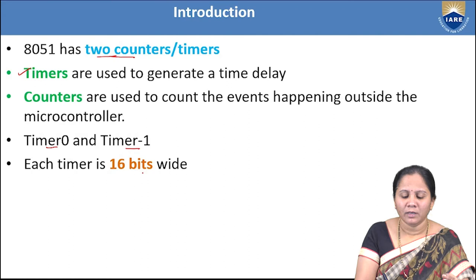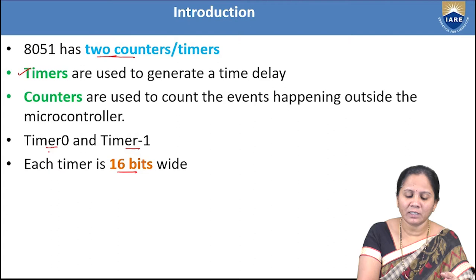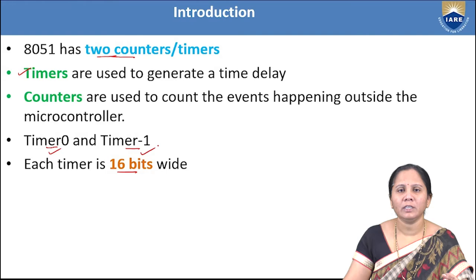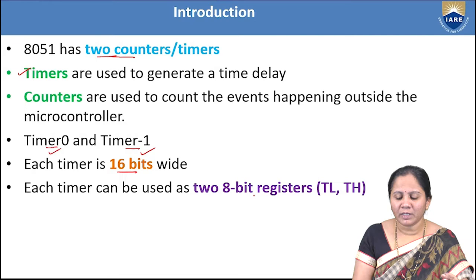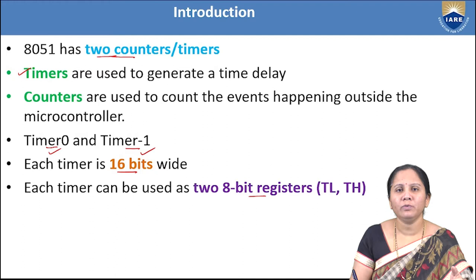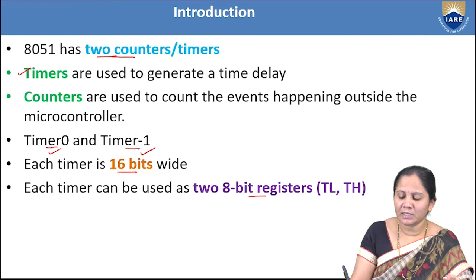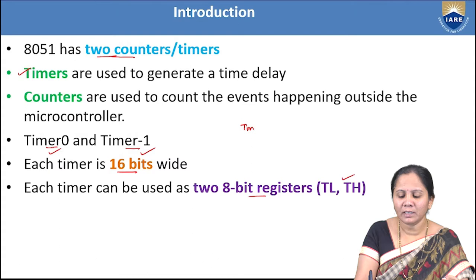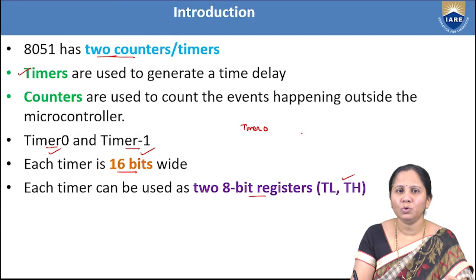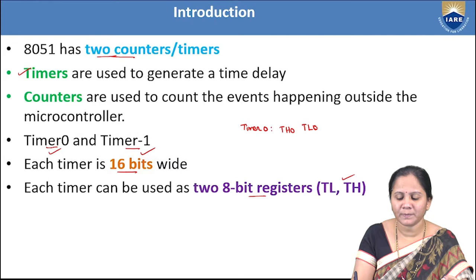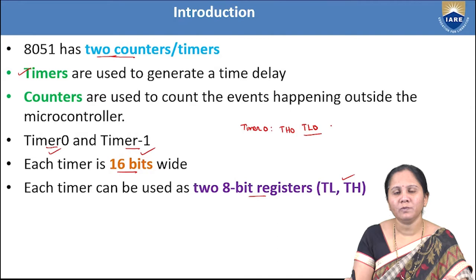Each timer is 16 bits in size. If we use a 16-bit timer as two 8-bit registers, it can be represented as TL and TH. For Timer 0, TL0 holds the lower order 8 bits and TH0 holds the higher order 8 bits.